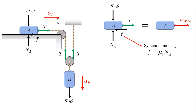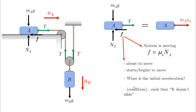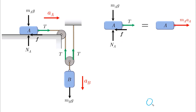If nothing is explicitly mentioned about motion, look for keywords such as: 'the system is about to move,' 'the block starts to move,' 'what is the initial acceleration,' or conditions like 'the block does not slide' or 'the car does not slip.' All these lead to the same conclusion: the static friction has reached its maximum value, and friction is mu_s times N.